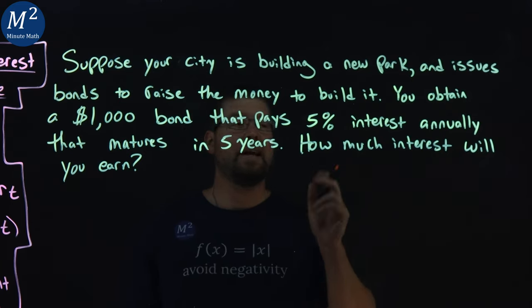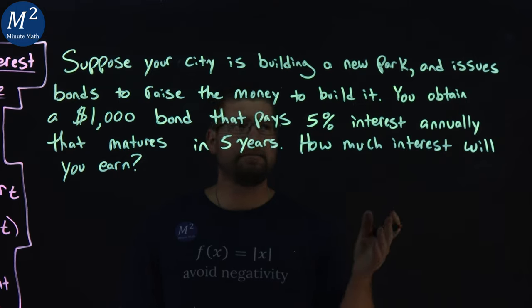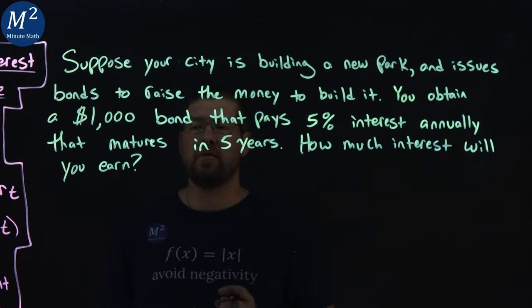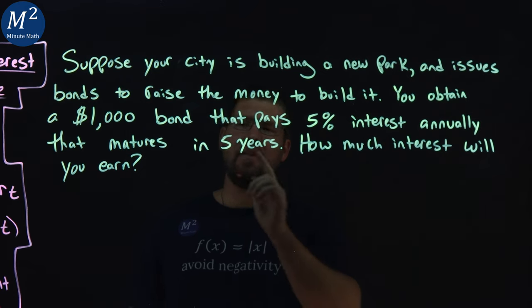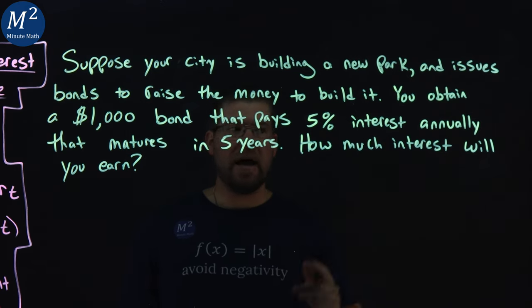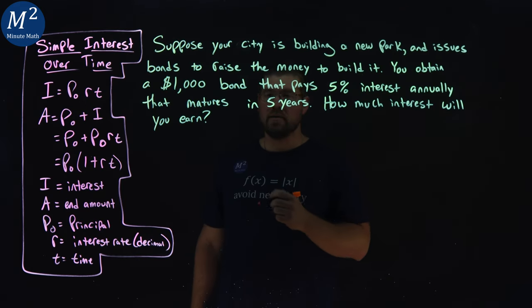Suppose your city is building a new park and issues bonds to raise the money to build it. You obtain a $1,000 bond that pays 5% interest annually that matures in 5 years. How much interest will you earn? Let's learn.